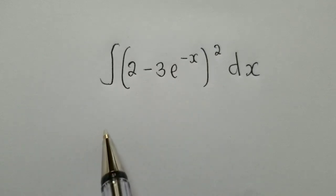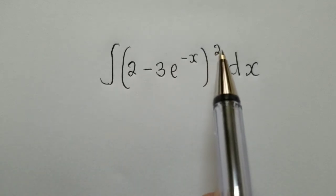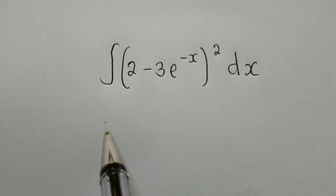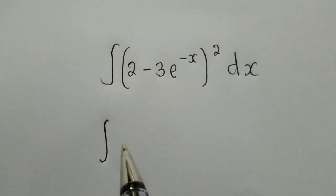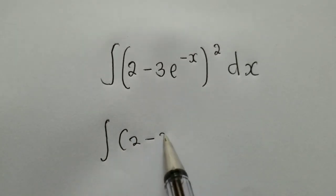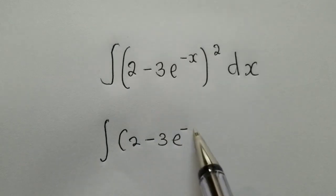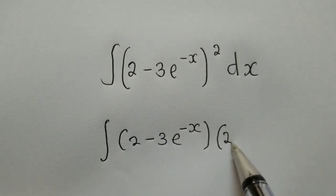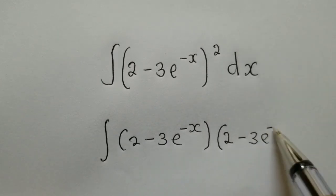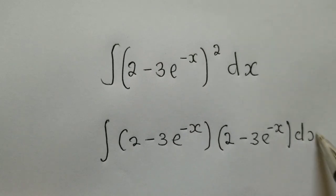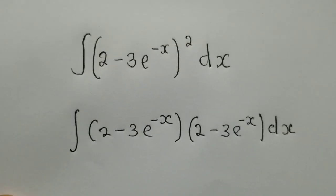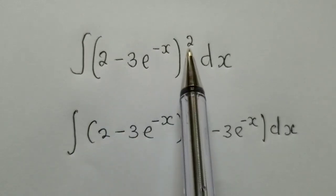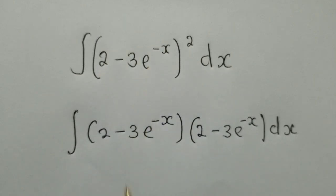To integrate this, we first need to get rid of the power. So what we're going to do is write the integral of 2 minus 3e^(-x), the quantity squared, as the integral of (2 minus 3e^(-x)) multiplied by (2 minus 3e^(-x)) dx. The reason we do this is because this power 2 means multiply the expression by itself.